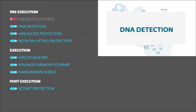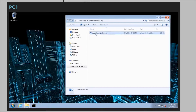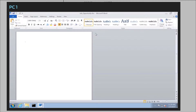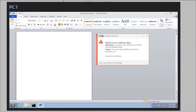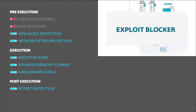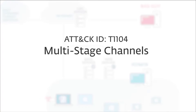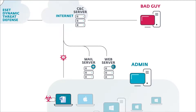If we allow the threat to run past the DNA detection, it would be detected by ESET exploit blocker, a detection layer designed to detect exploits generically, even zero days. If ESET exploit blocker was not in place, the threat would execute and try to connect to its command and control server in order to download the next stages. This attempt would be blocked by ESET's Web Access Protection layer.